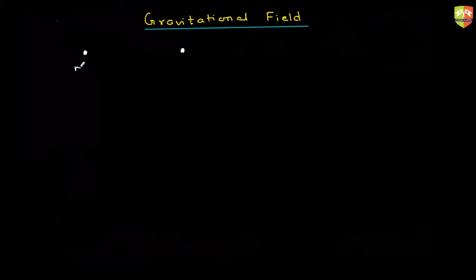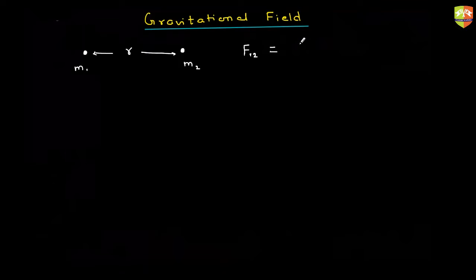Suppose two point masses m1 and m2 are there, and the distance between them is R. The force on m1 due to m2 is given by G·m1·m2 / r².